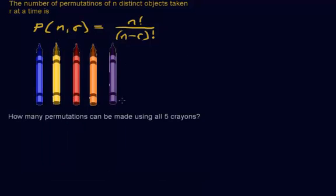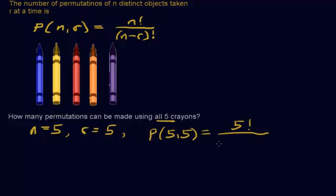So how many permutations can be made using all five crayons? So how many objects do we have to start with? Well, we have five objects to start with. And r represents how many you're going to be picking at a time. It's saying how many permutations can be made using all five crayons. So not only do we have five to start with, we're picking all five. Alright, so the permutation formula could be written as 5P5. And so that's going to be 5 factorial over 5 minus 5 factorial. So that's 5 factorial over 0 factorial.